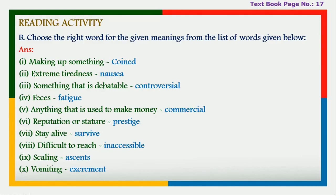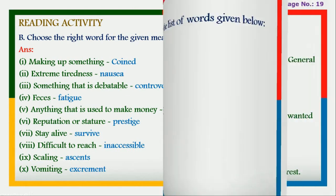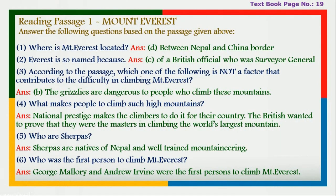Next, reading passage about Mount Everest is given and you need to answer the following questions based on this passage. Textbook page number 19: where is Mount Everest located? Answer: between Nepal and the China border. Everest is so named because of a British official who was Surveyor-General.